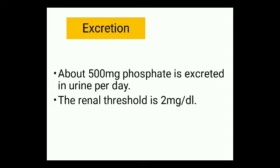About 500 mg of phosphate is excreted in urine per day. The renal threshold is 2 mg per deciliter. That means if the phosphate concentration in blood is more than 2 mg per deciliter, the kidneys will begin to remove it in the urine.